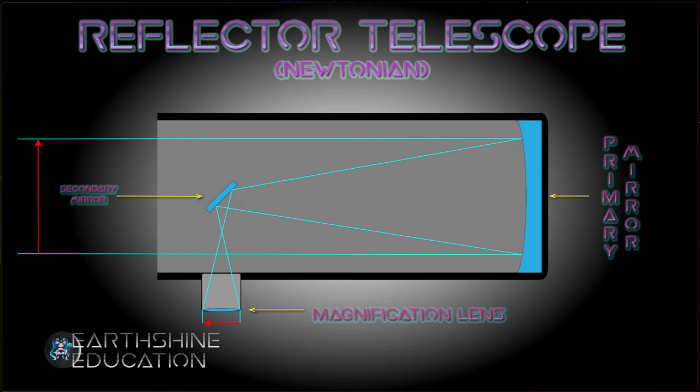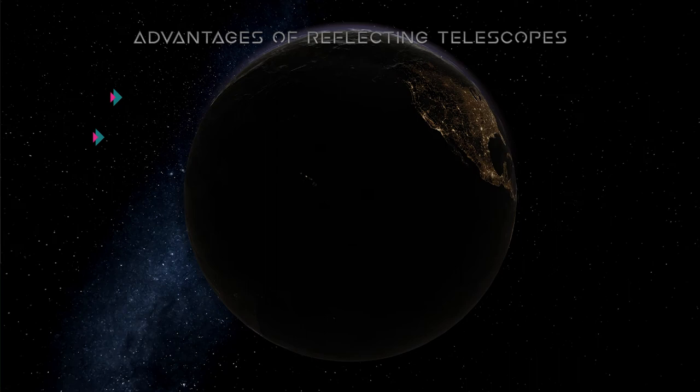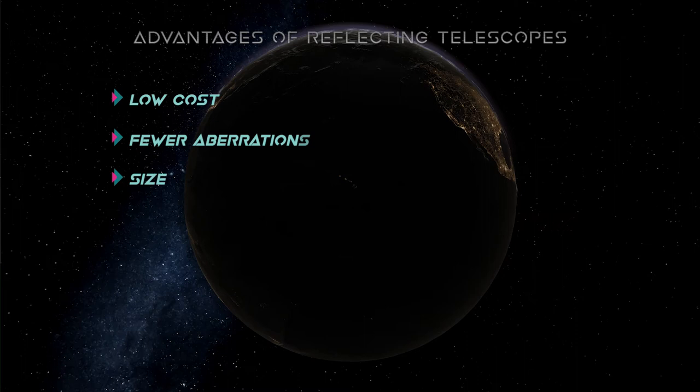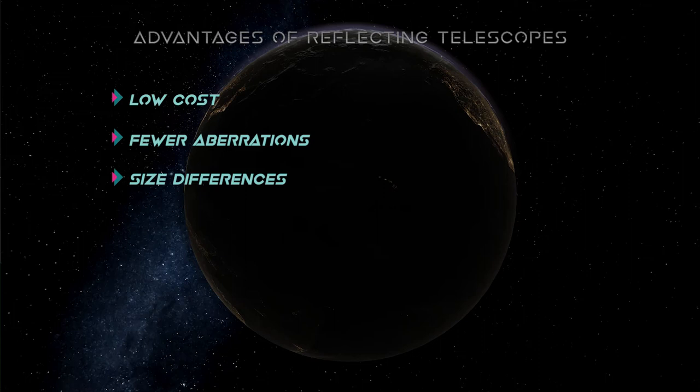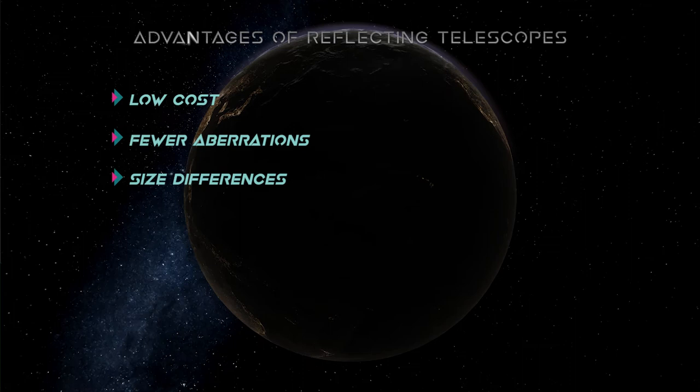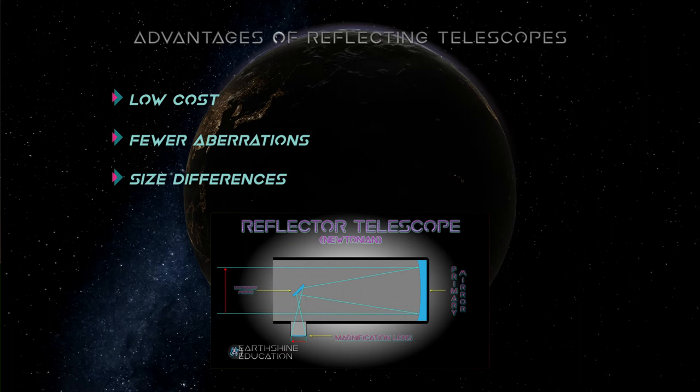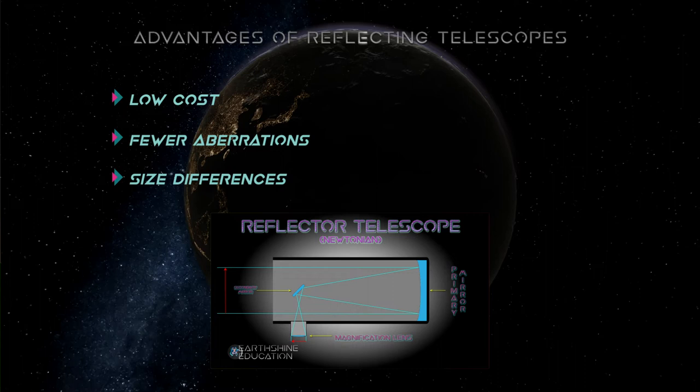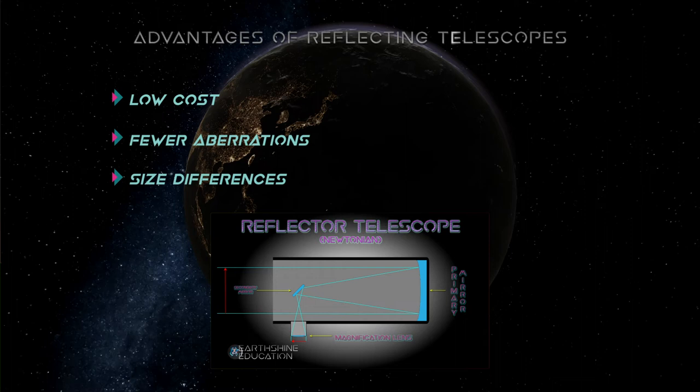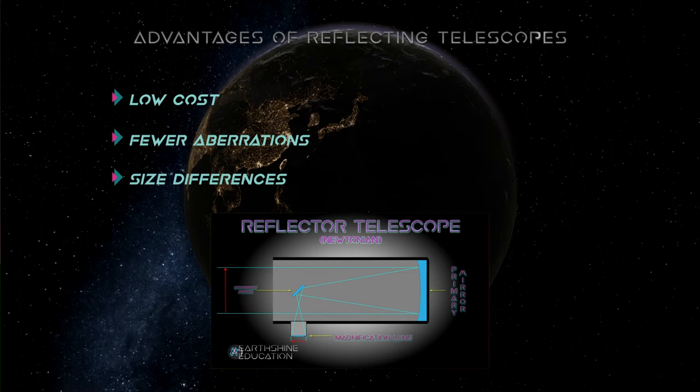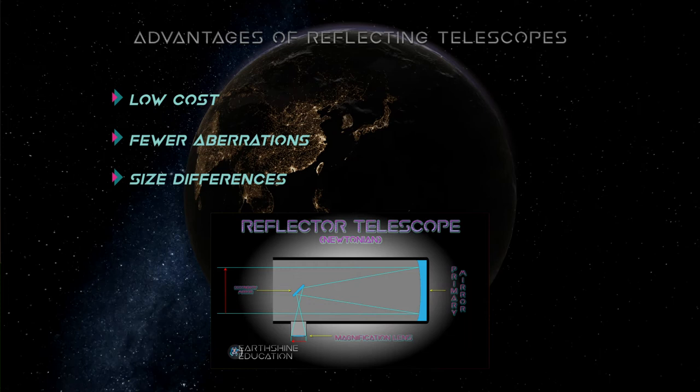There are some advantages to using reflectors. Primarily, low cost. Mirrors use only one reflective surface, so they're easier to construct and cheaper than lenses. There's fewer aberrations. Mirrors reflect all wavelengths of light equally, so there's no chromatic aberration. Mirrors also have less spherical aberration, which is the scattering of light which occurs when lenses aren't focused properly. And of course, there's a big difference in telescope sizes. Because mirrors can be made much larger and are more durable than lenses, you can make really big mirrors which reflect a large amount of light and that will improve your quality and detail in your image because you're collecting more light.